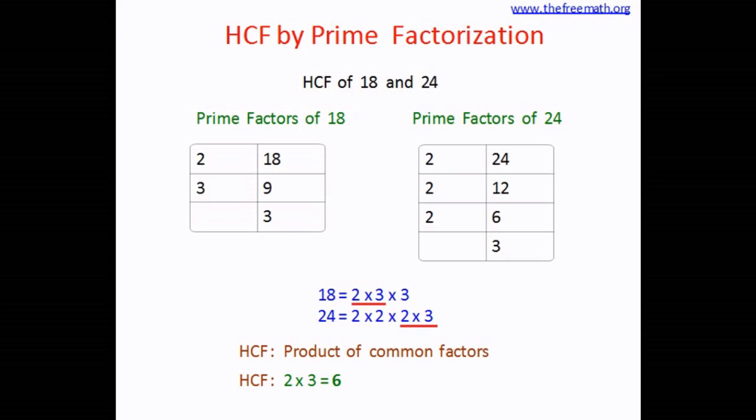To figure out the highest common factor we have to get these common prime factors and make a product of it. So the product of these common prime factors 2 multiplied by 3 is 6.